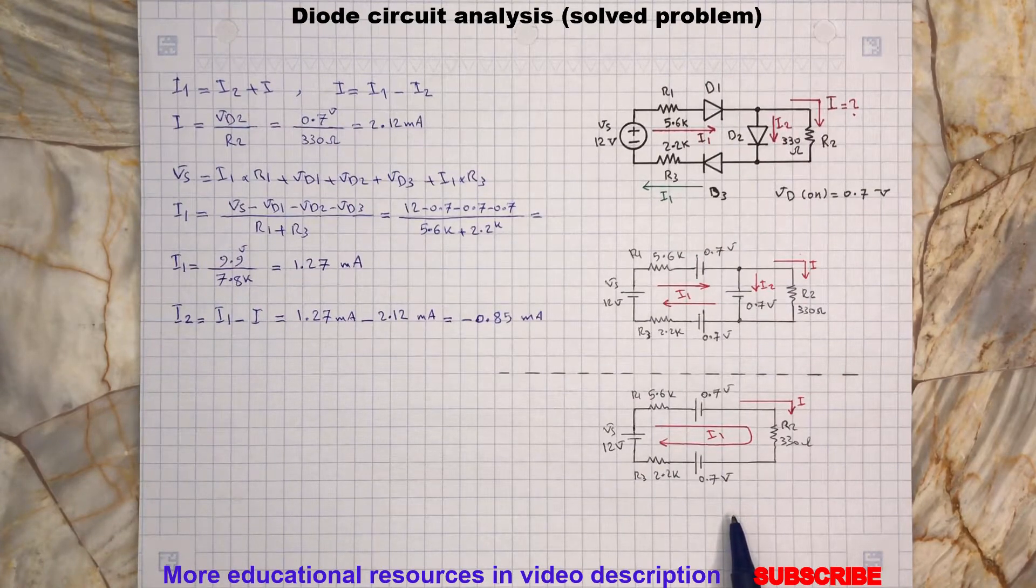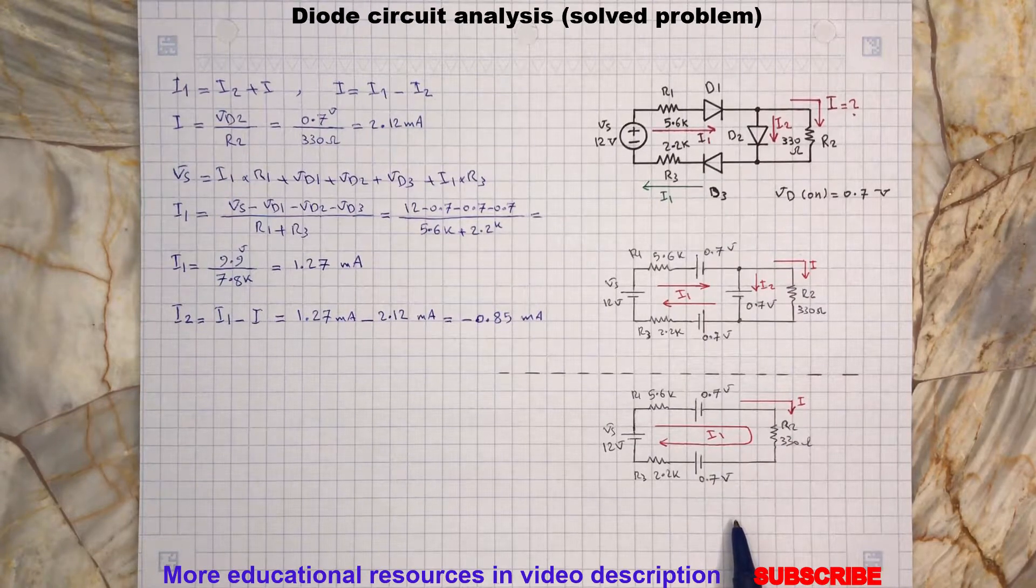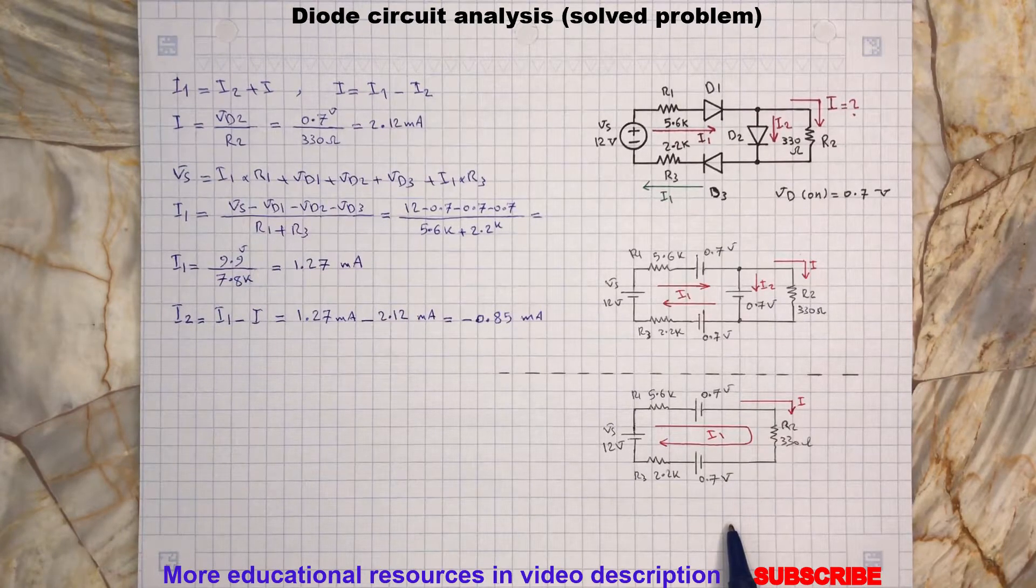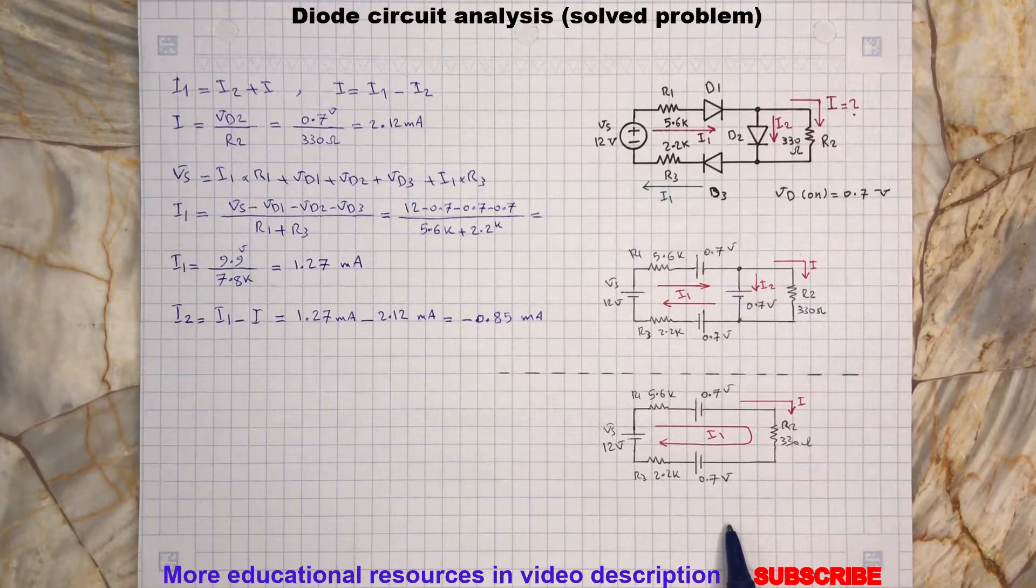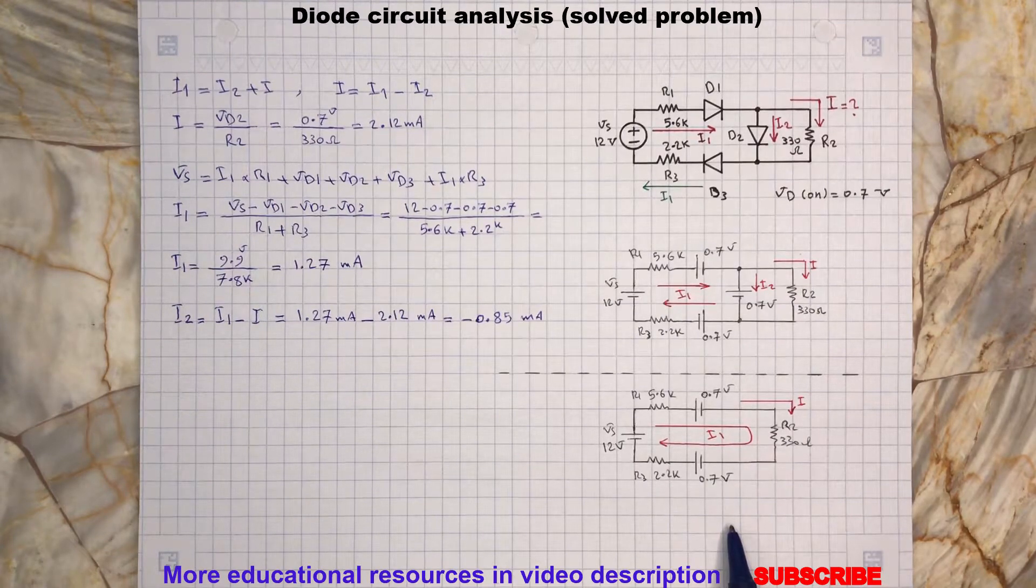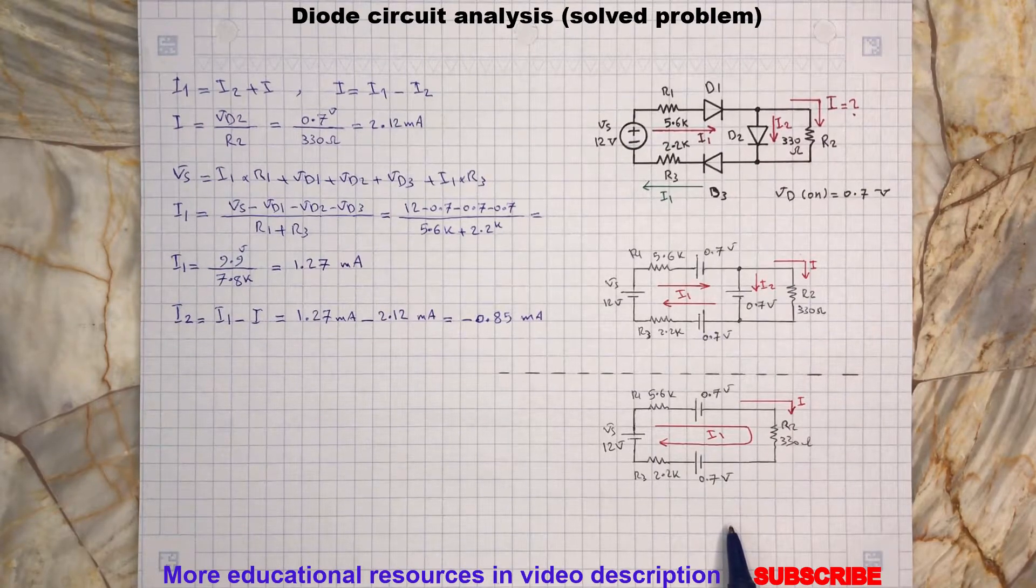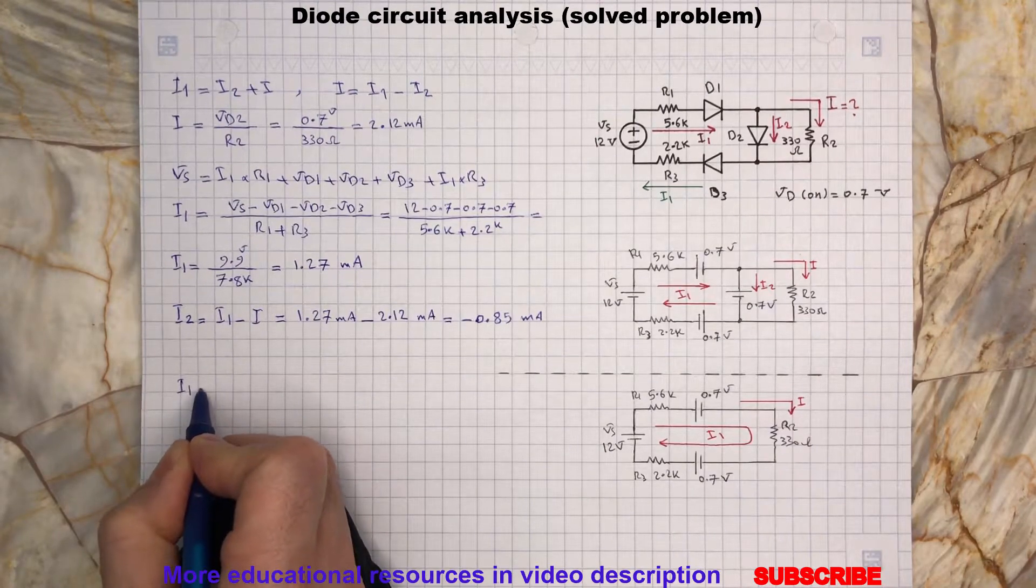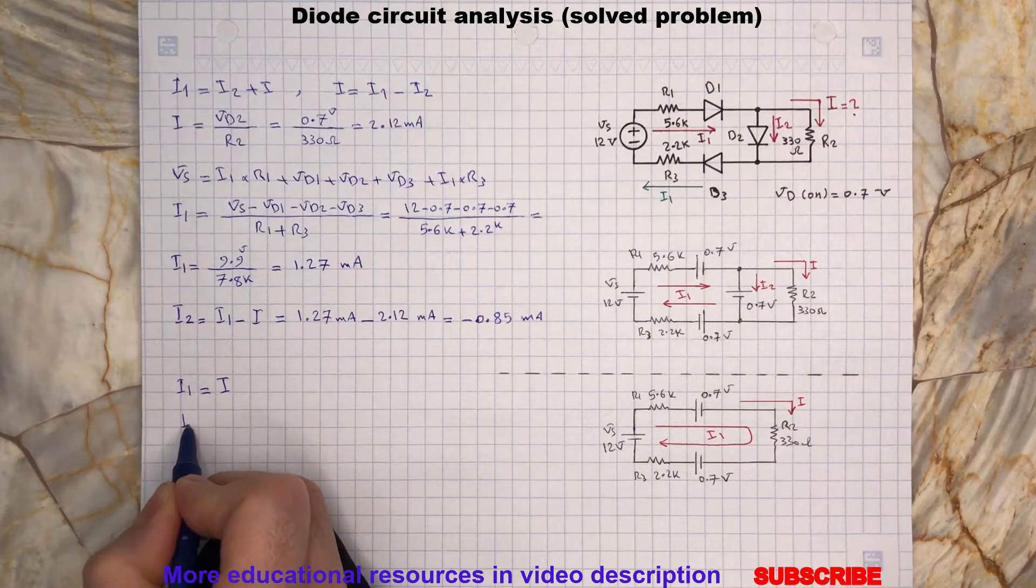Now back to the video. As you can see here, this is a simplified circuit after removing D2 because it was off. In this case, we will have only one current because all the elements are in series and the current I is the same as current I1. So to find this current, we can deduct all the voltage across the diodes D1 and D3 from the source voltage Vs and divide by all the resistors.